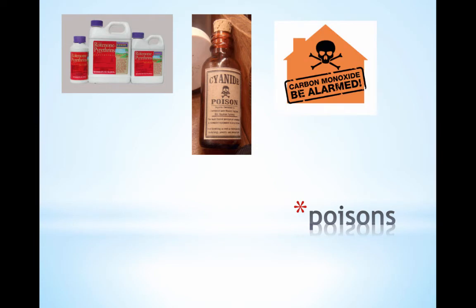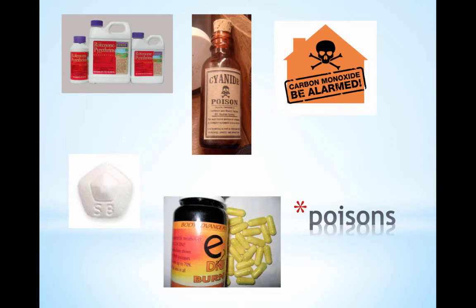Oligomycin is an antibiotic that blocks the passage of hydrogen ions through the ATP synthase channel. It's used on the skin to kill fungal infections by preventing the use of the hydrogen ion gradient's potential energy to make ATP. Another type of poison is called uncouplers, which make the mitochondrial membrane leak hydrogen ions. The electron transport chain continues, but the hydrogen ion gradient is ruined, so ATP cannot be made.